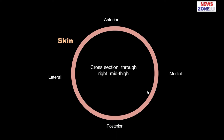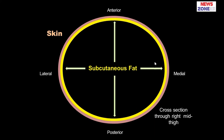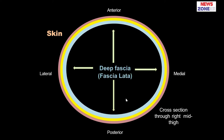The thigh is covered by the skin. Suppose this is the skin, and we are seeing the cross-section of the mid-thigh portion. This is the anterior area, this is the posterior area, this is the medial aspect, and this is the lateral aspect. Just after cutting the skin, we will see a very thin layer of connective tissue, mainly composed of subcutaneous fat, also known as the subcutaneous fascia. We have given it yellow color because it is composed of fat, which is yellow. Then after the subcutaneous fascia, we will see the deep fascia or fascia lata. Fascia lata is the deep fascia of the thigh, composed of dense irregular connective tissue.